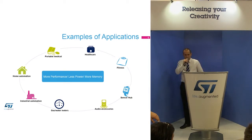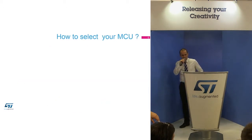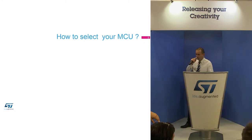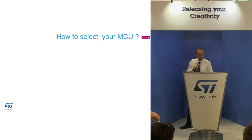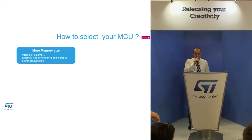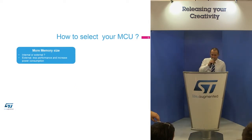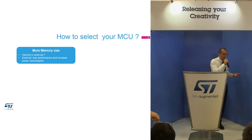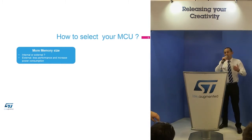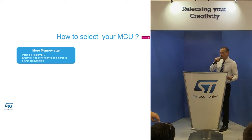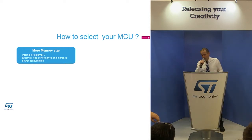The next question is how to select an MCU based on these three parameters. Regarding memory sizes, the first question is: internal or external? External memory has a penalty in terms of power consumption, because you have to toggle the IOs externally.